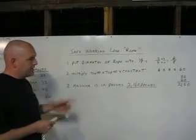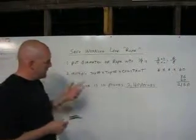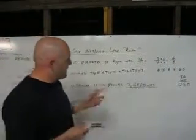The next step is you multiply the top number, which is six, and the top number, which is six, and the constant of the rope.